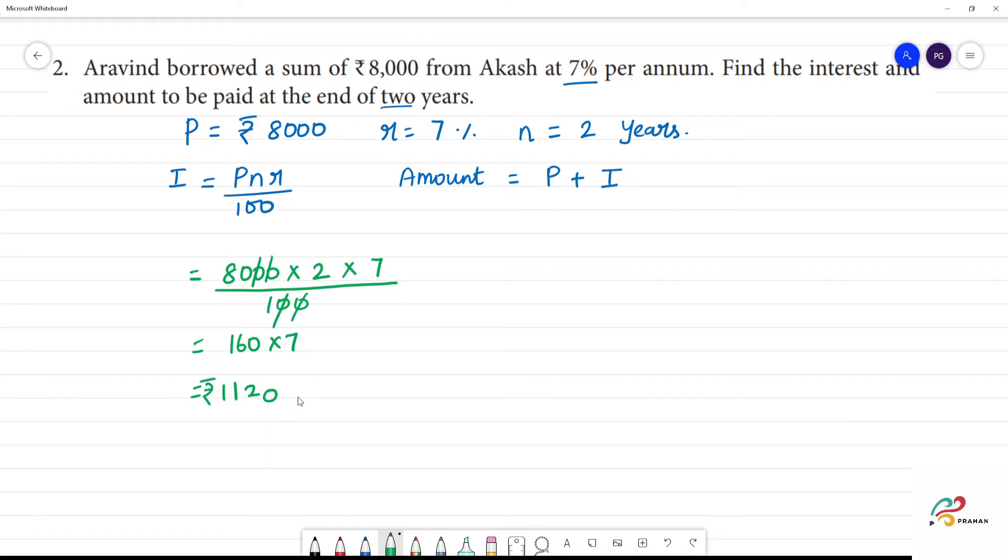the answer is Rs.1,120 is interest. Now, amount is equal to principal amount. Principal amount is Rs.8,000 plus interest is Rs.1,120. Total, Rs.9,120.